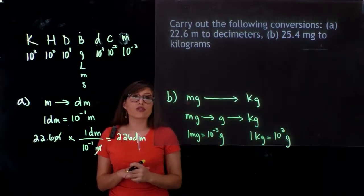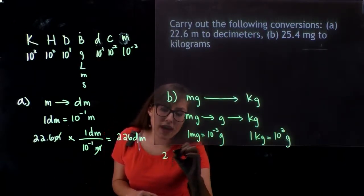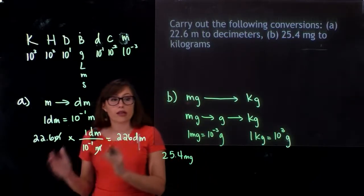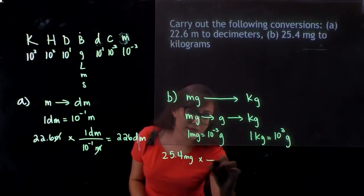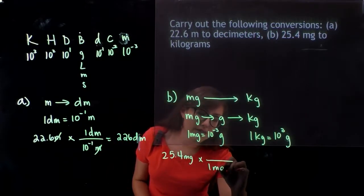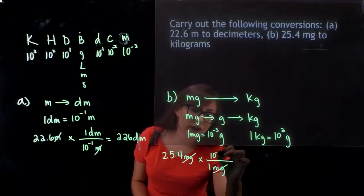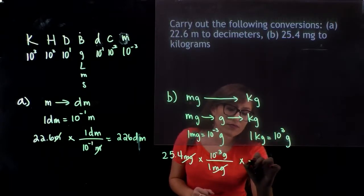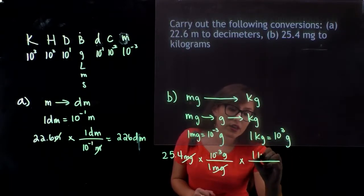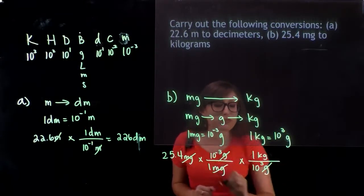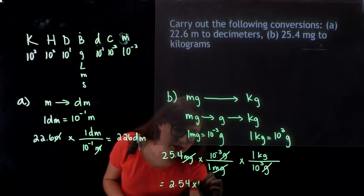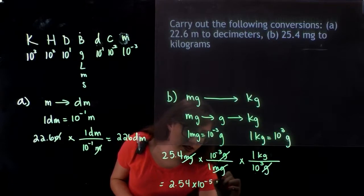We're going to use each of these units to convert. We have 25.4 milligrams, and we want to go from milligrams to grams, so we use our first conversion factor with 1 milligram on the bottom so they cancel, and grams on the top. Then for the next conversion factor, 1 kilogram goes on the top with 10 to the 3rd grams on the bottom. Grams and grams cancel, and this equates to 2.54 times 10 to the negative 5th kilograms.